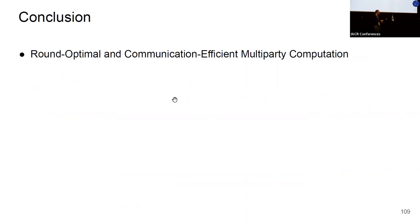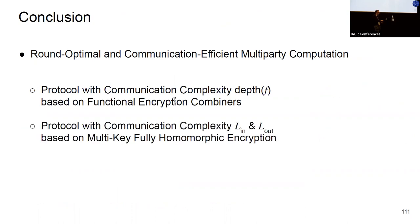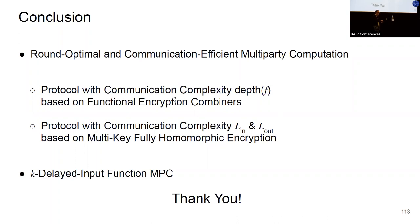To summarize, we have shown how to realize round-optimal and communication-efficient MPC. We presented two protocols: one with communication complexity depending on the depth of the function using function encryption combiners, and another using multi-key FHE where we only have dependency on the input/output length. Along the way, we introduced the notion of k-delayed input function MPC, which helped construct this round-optimal protocol with enhanced properties. Thank you for listening.